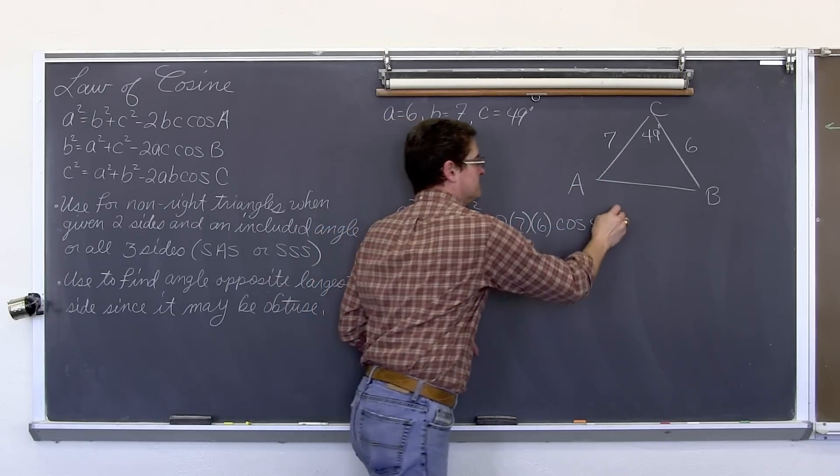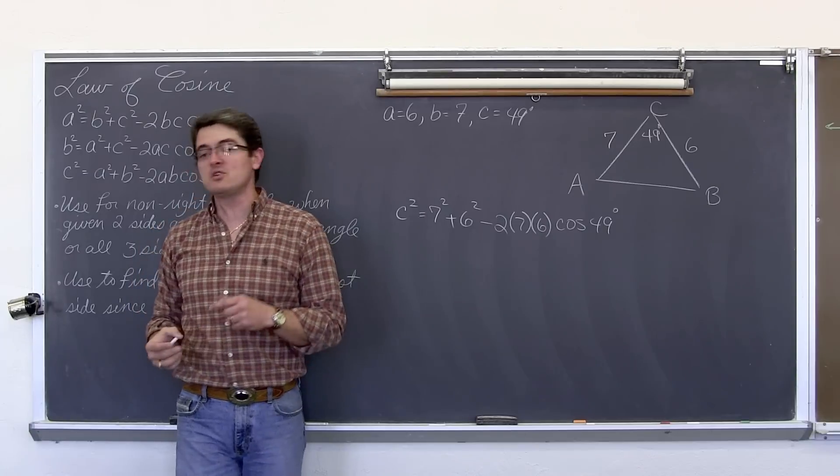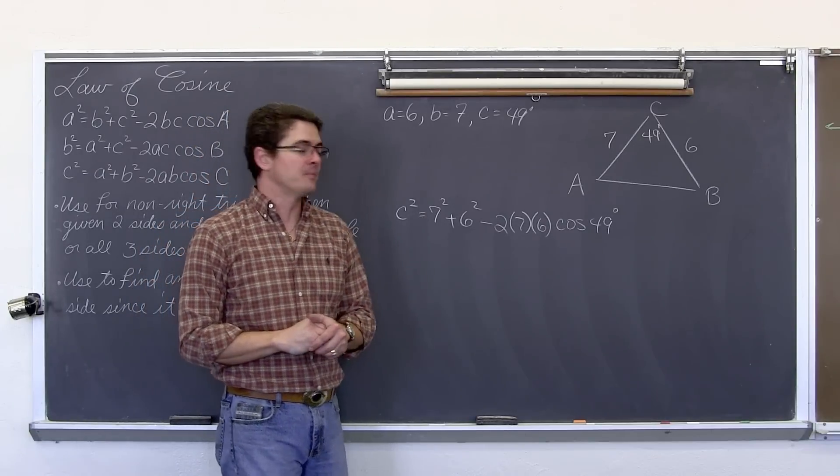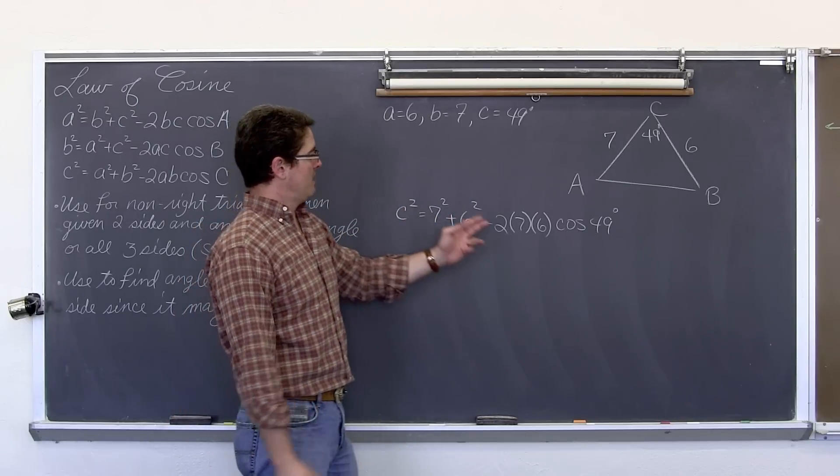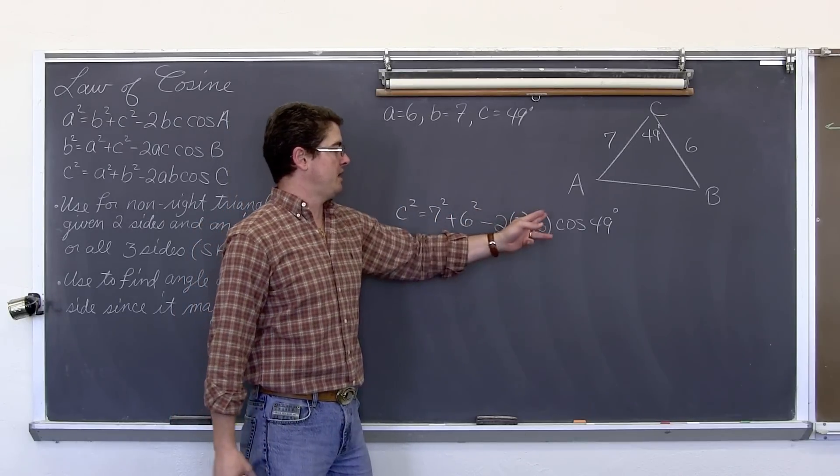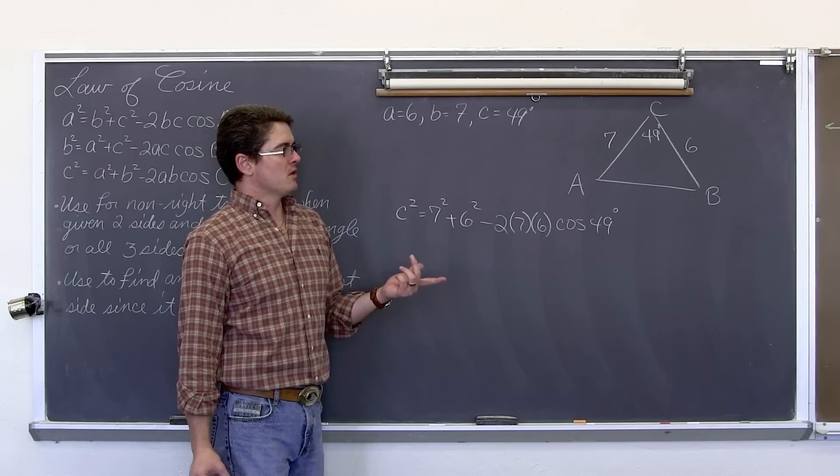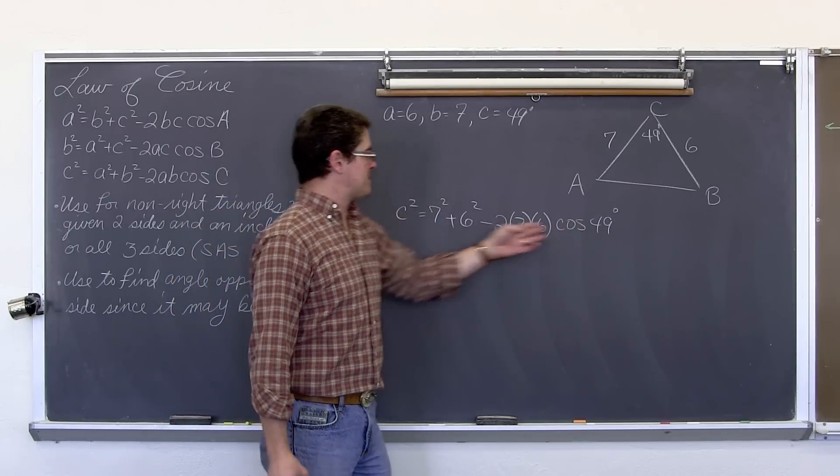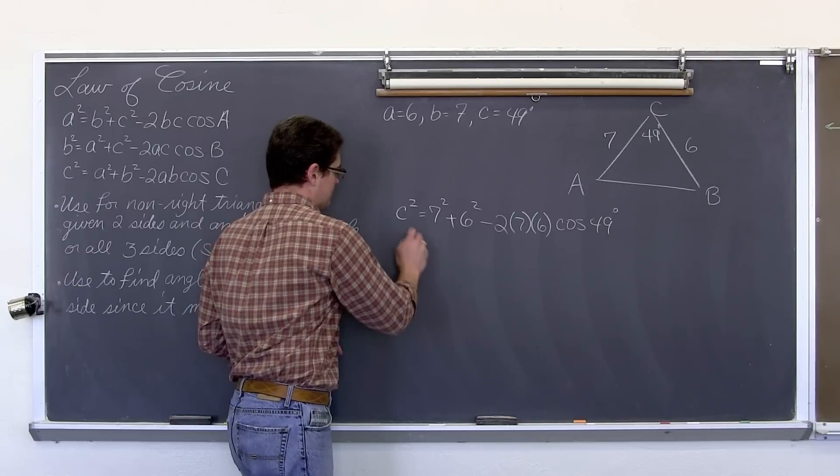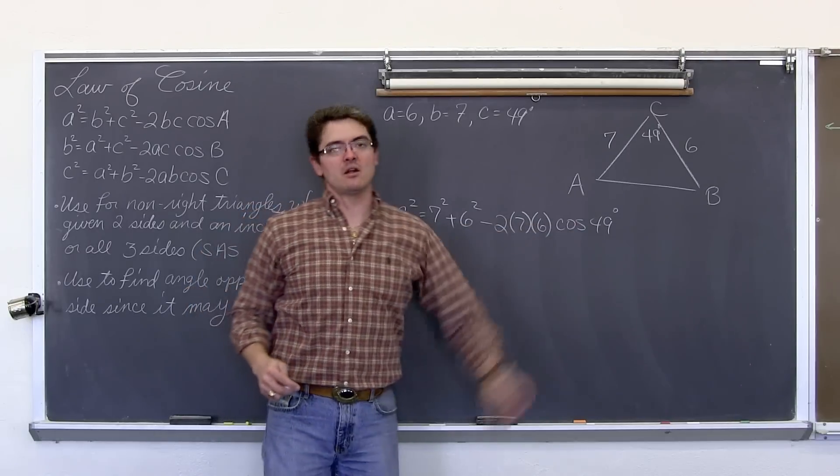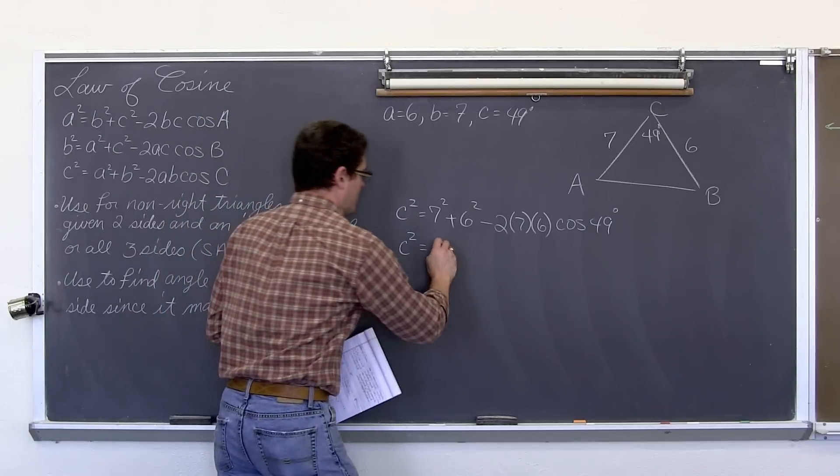Now do make sure that your graphing calculator or scientific calculator is in degree mode and not radian mode because you will get the wrong answer even if you have set it up correctly. Now I can do seven squared is 49 and six squared is 36. 2 times 7 is 14 and 14 times 6 is 60 and 24 is I believe 84. But we are going to have to type this into our calculator anyway. So if you have a graphing calculator or a two line scientific, you are just going to type that in all at once anyway.